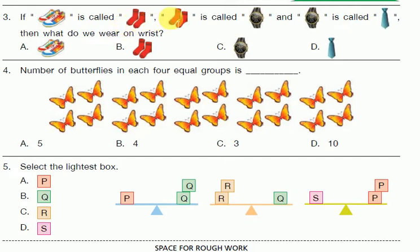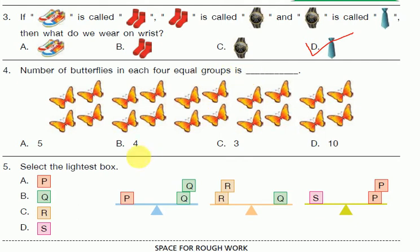Question 3: If shoes is called socks, socks is called a watch, watch is called a tie — then what do we wear on our wrist? The answer is watch. Question 4: The number of butterflies in each of the equal groups is — the answer is 5.